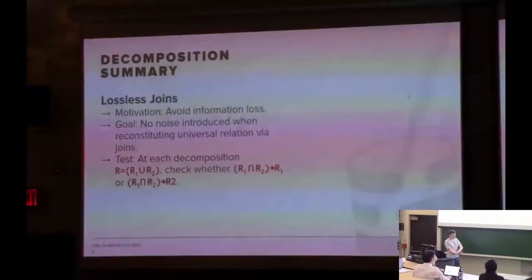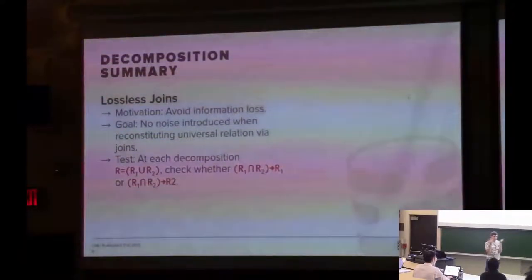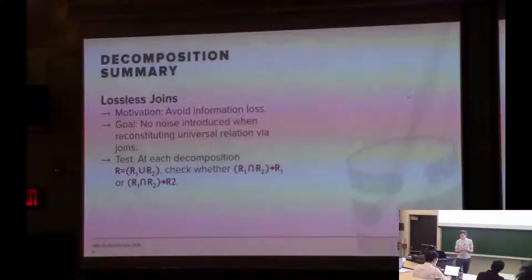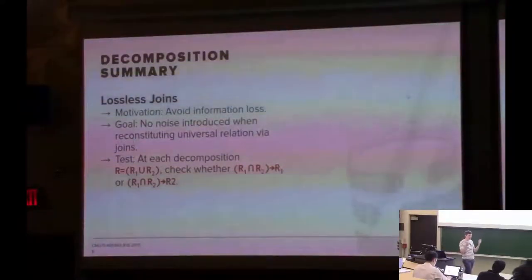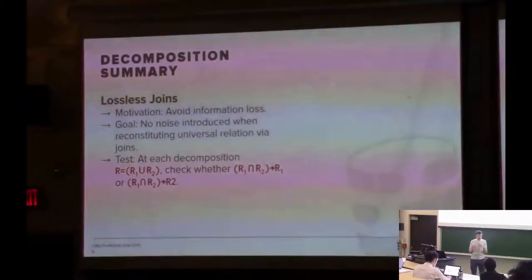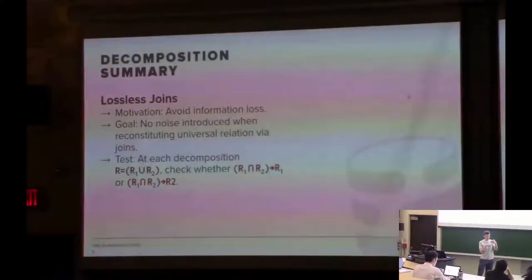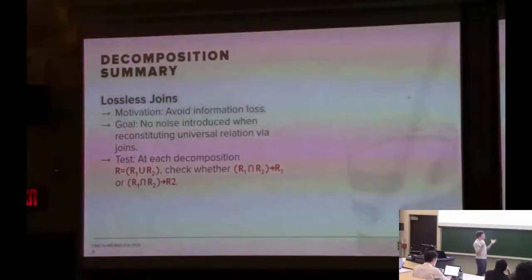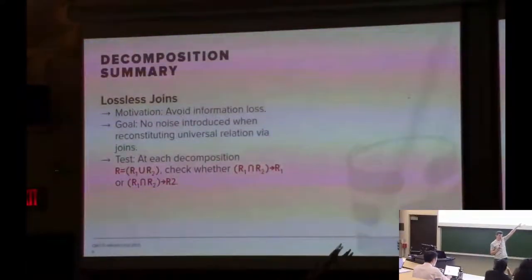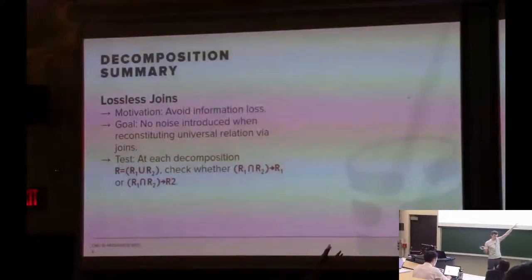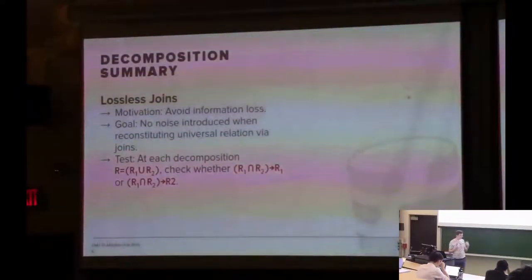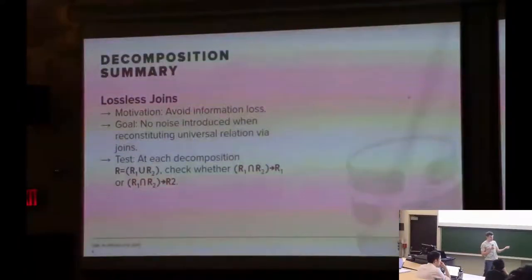The first decomposition property is lossless joins: if we decompose a single relation into two sub-relations, when we join them back together using a natural join we won't generate any incorrect data. I showed an example where joining a table back together produced rows that didn't exist in the original universal relation. We said this property was mandatory — we don't want data that shouldn't be there. The test is: the intersection of R1 and R2 must either be a superkey of R1 or R2.